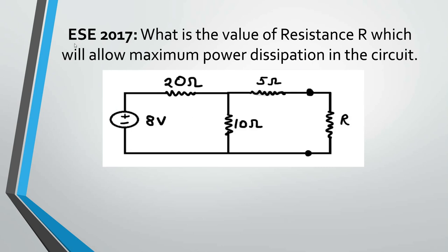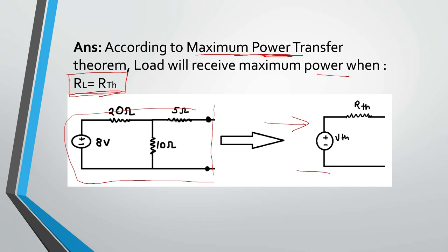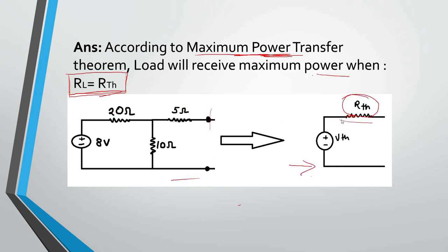Let's solve this question from EAC 2017 to get a better understanding. Here you can see this source is independent, not dependent. You have to find the value of resistance R which will allow maximum power dissipation in the circuit. According to the maximum power transfer theorem, the load will receive maximum power when load resistance equals the internal or Thevenin resistance. So we will convert this circuit into Thevenin's equivalent circuit, and RTH will be the equivalent or internal resistance.